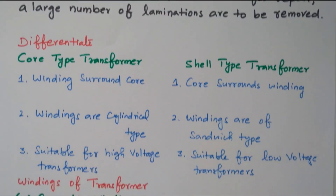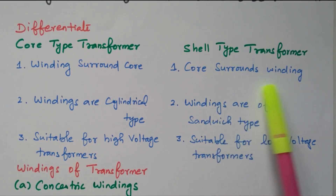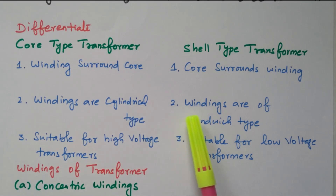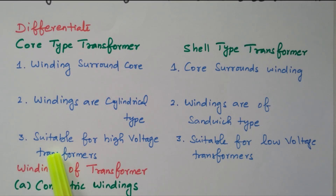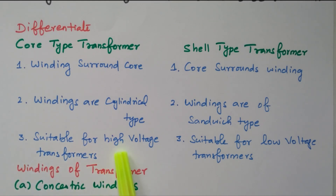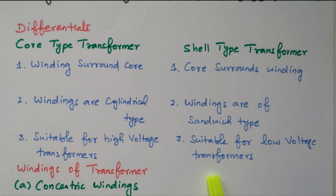Comparing the two types: in core type, windings surround the core; in shell type, core surrounds the winding. Core type uses cylindrical windings, shell type uses sandwich windings. The core type is suitable for high voltage transformers because the two windings are on two different limbs — primary on one end, secondary on another — with no physical contact, only magnetically coupled. The shell type is suitable for low voltage transformers, as one winding is placed over the other, creating a possibility of short circuit.